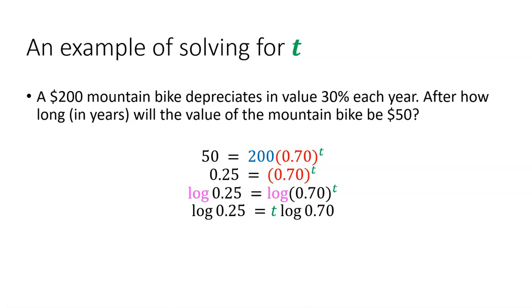So now to get t by itself, it's t times log .70. We're going to divide both sides by log .70. We'll stick it in the calculator to find out that that's about 3.86716. So if we go to two decimal places, that's about 3.89 years for the value of the mountain bike to depreciate down to $50.